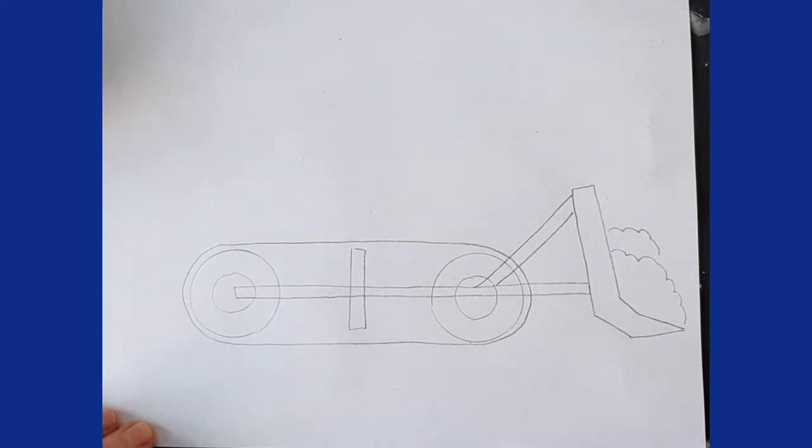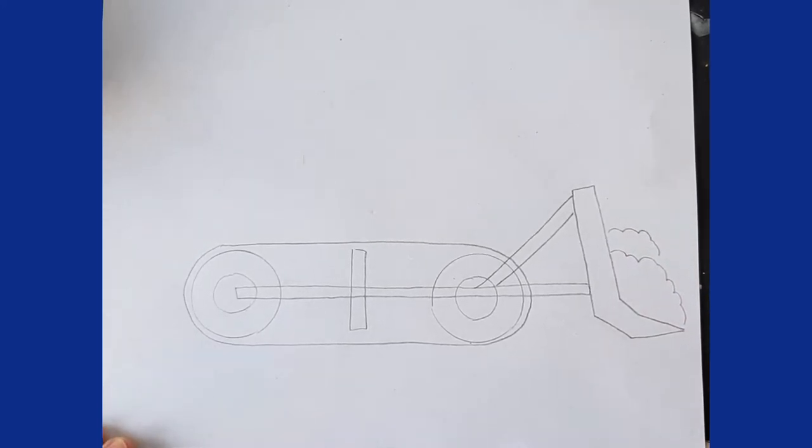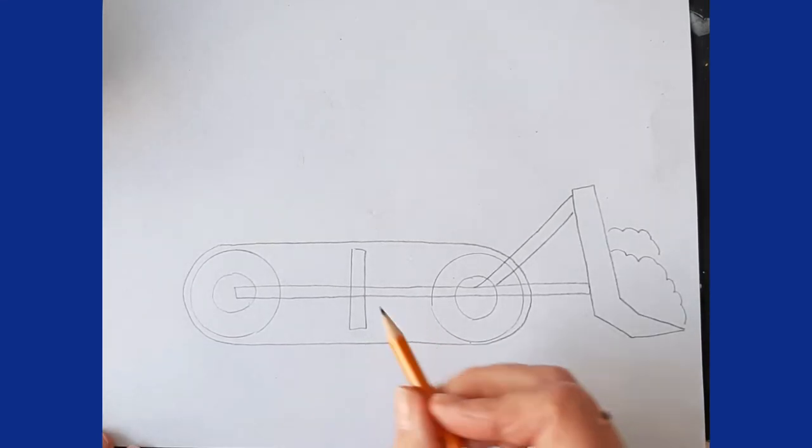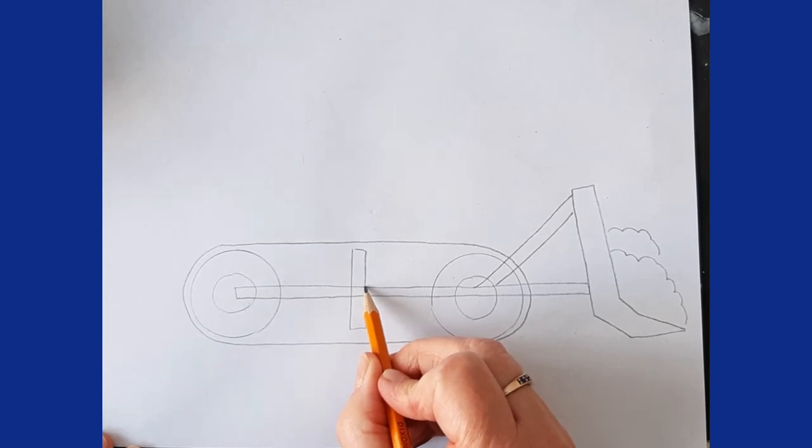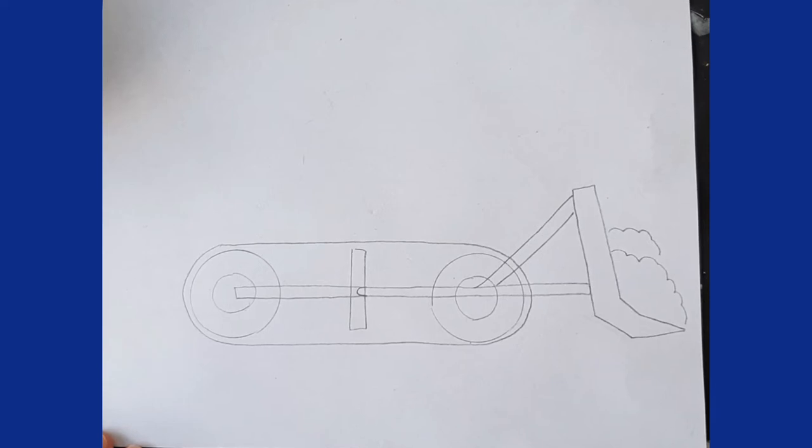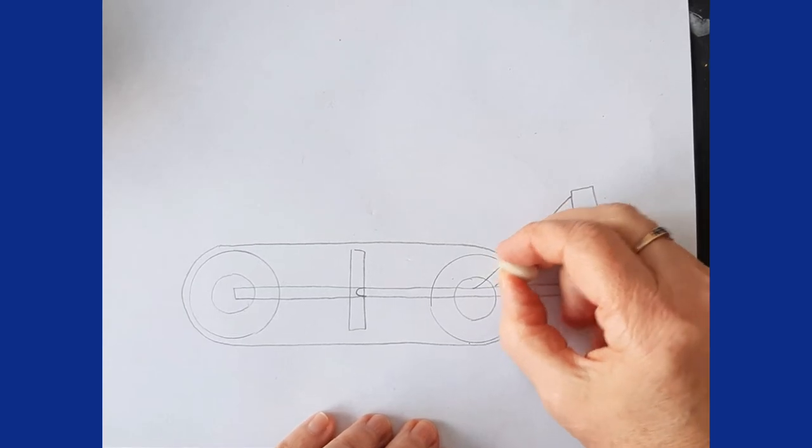Now we want to do a little bit of erasing. I'm going to do a line here and a line there. I'm going to erase some lines here and through here.